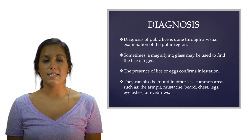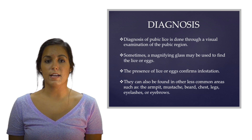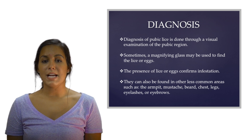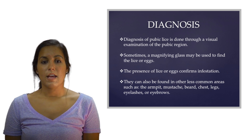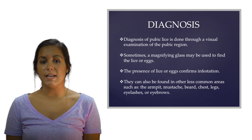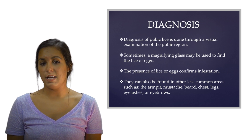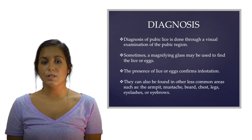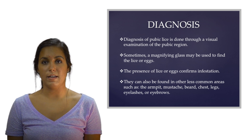Pubic lice infestation can lead to complications such as discolored skin — pale blue spots may develop where pubic lice have been feeding continually. Secondary infections can also occur; if itchy lice bites cause scratching to the point of open wounds, those wounds can become infected. Lastly, eye irritation: children who have pubic lice on their eyelashes may develop a type of pink eye, also known as conjunctivitis.